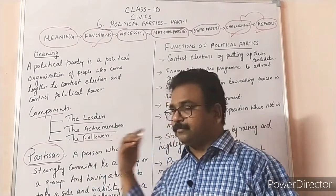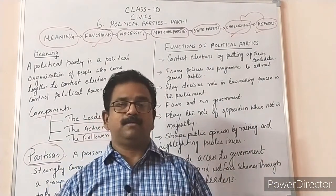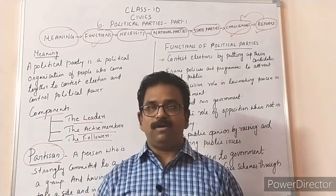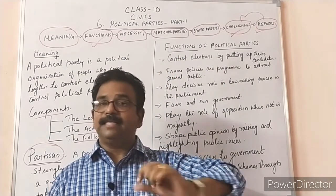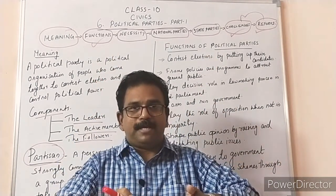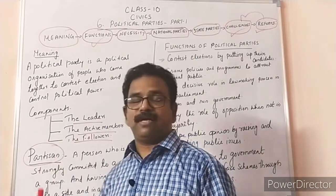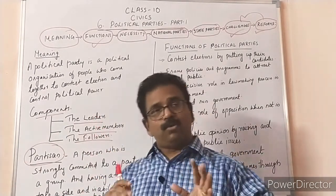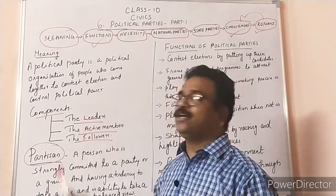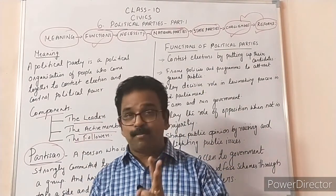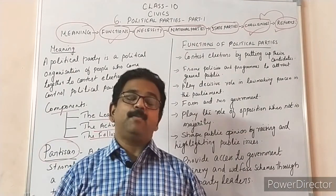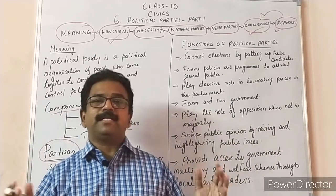Every political party has mainly three components. What are they? The leader, the active members, and the followers. For example, like a school has a principal at the top, then teachers, then students — similarly, a political party has a top leader, then active party members and active participants, and then the followers who just support. These are the three components of a political party.